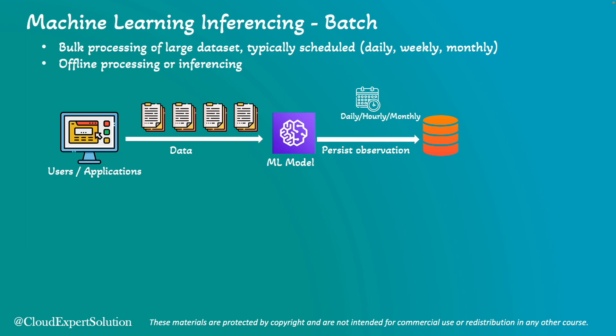Once the machine learning algorithm runs, it will generate the prediction, and after that it will parse the prediction into some application — maybe a database or some other downstream application. Then the user or application will fetch the data from that application. This was the conventional or classical machine learning approach used for many years.